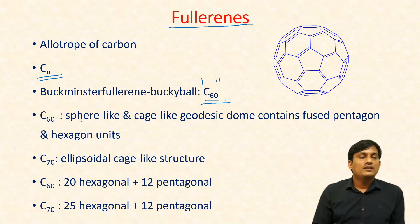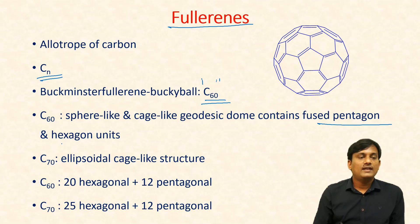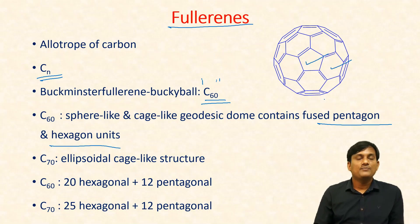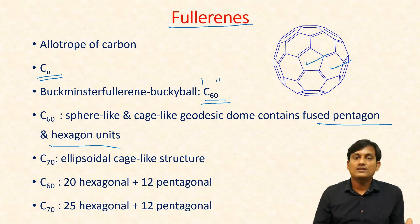C60 has a sphere-like, cage-like geodesic dome structure containing fused pentagon and hexagon units. This is a pentagon unit, and this one is a hexagon unit. If you take C70, it has an ellipsoidal cage-like structure.